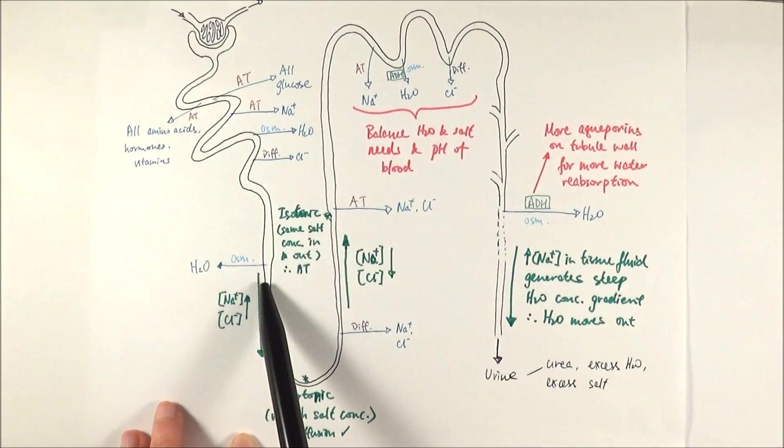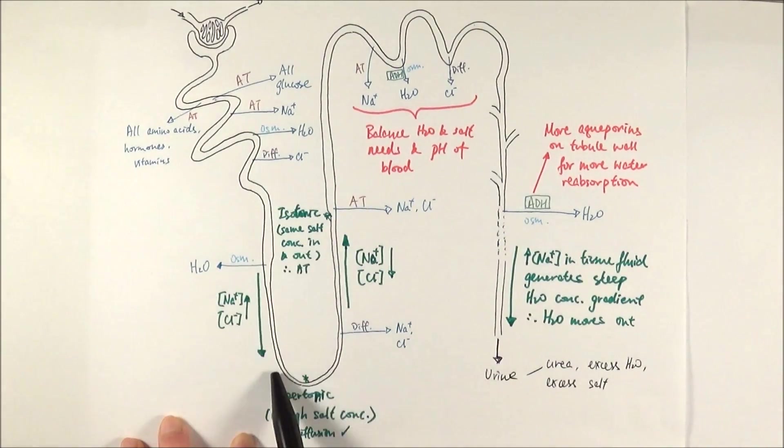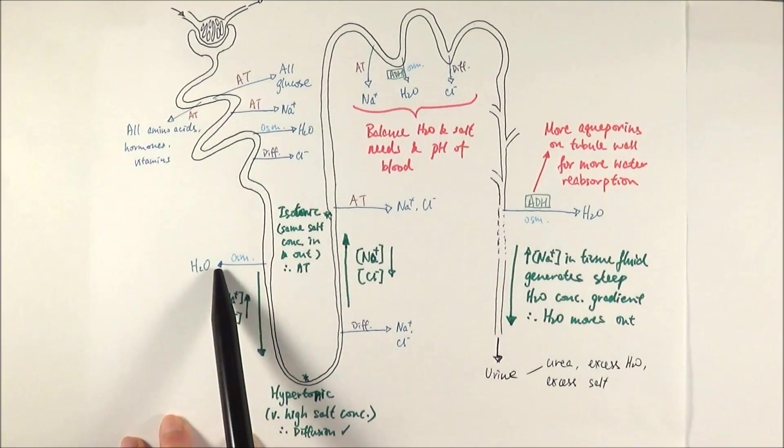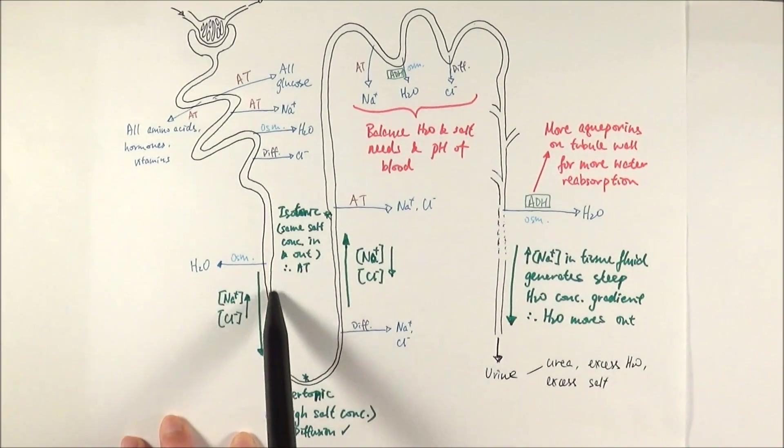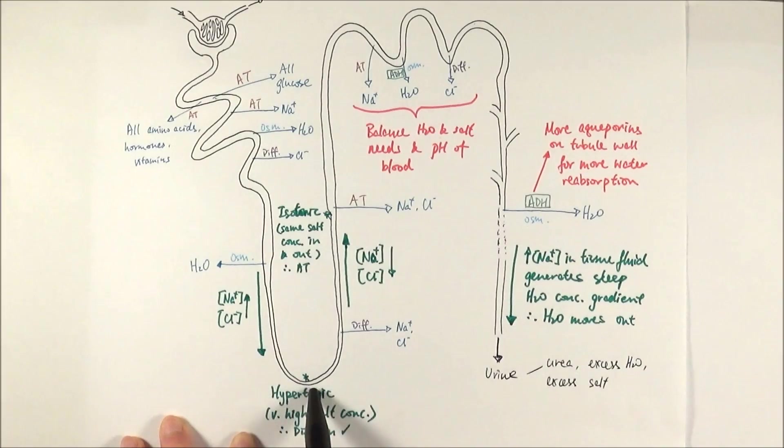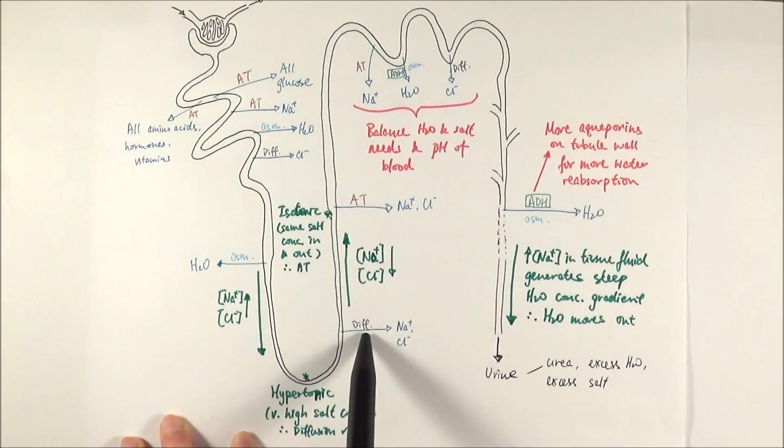Then the filtrate will travel down the loop of Henle here. Water is reabsorbed by osmosis, which leads to an increase in salt concentration inside the filtrate. When it reaches this point, it reaches the hypertonic point where there is a very high salt concentration in the filtrate. So therefore, salt can easily move out by diffusion.